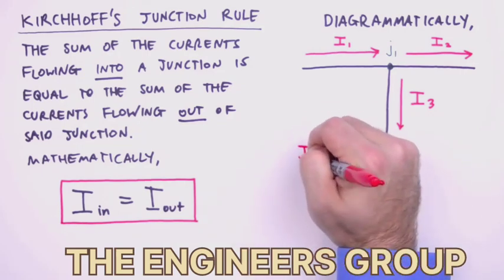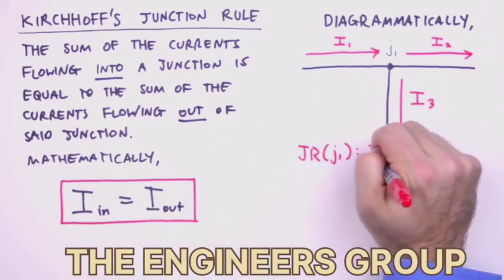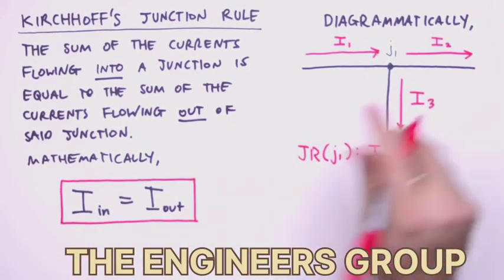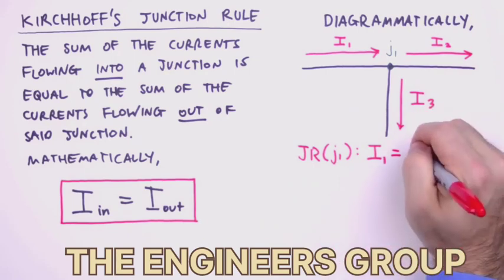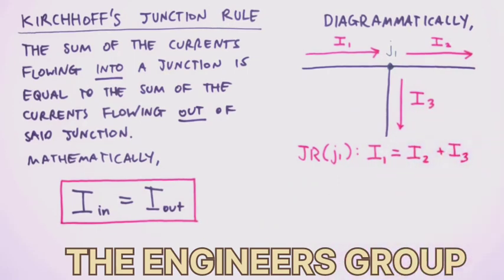So applying the junction rule to J1, we have current in, that's just I1, equals current out, which is I2 plus I3. And that's it. That's how the junction rule is applied to a junction.